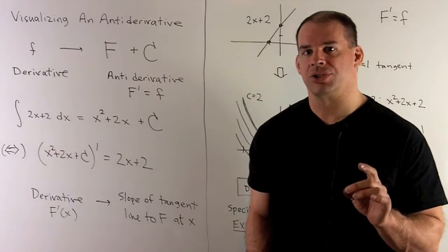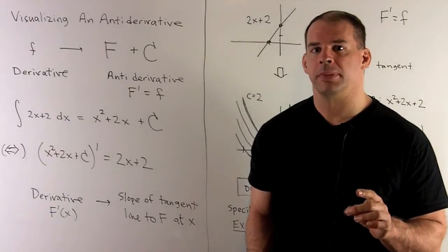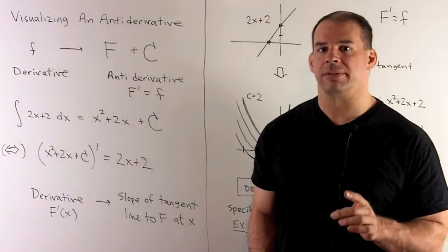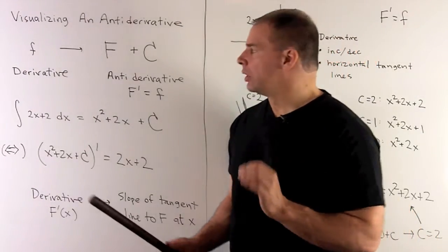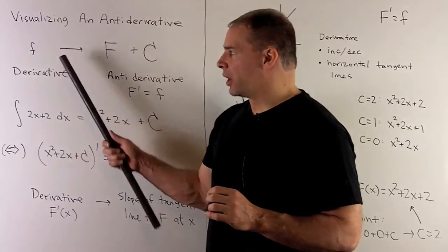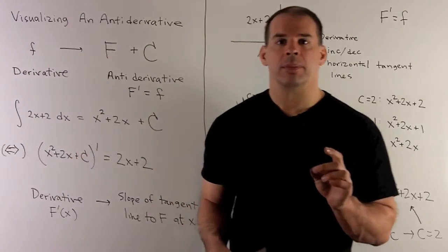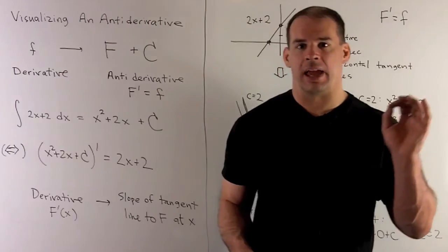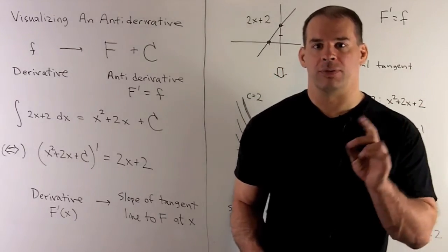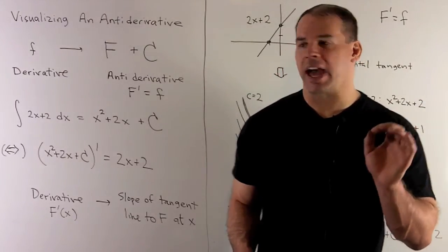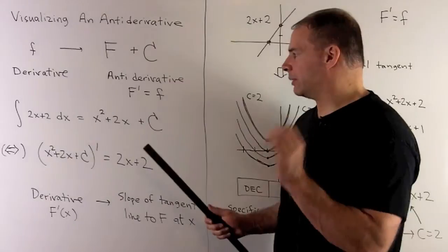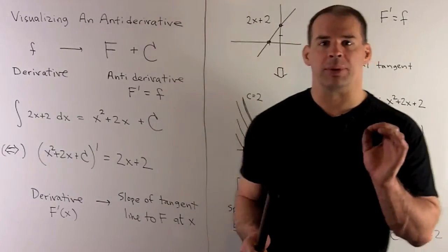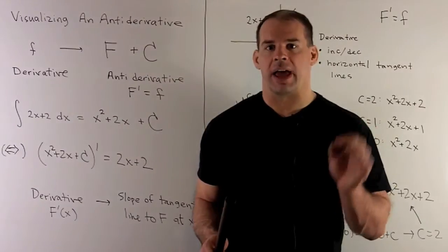Now that we have a few indefinite integrals under our belt, let's interpret our antiderivatives in terms of the graph of f. Our setup: we're going to have a function little f, treat it as a derivative, and find the function it came from. If we find a capital F such that capital F prime equals f, we'll call capital F an antiderivative of little f.